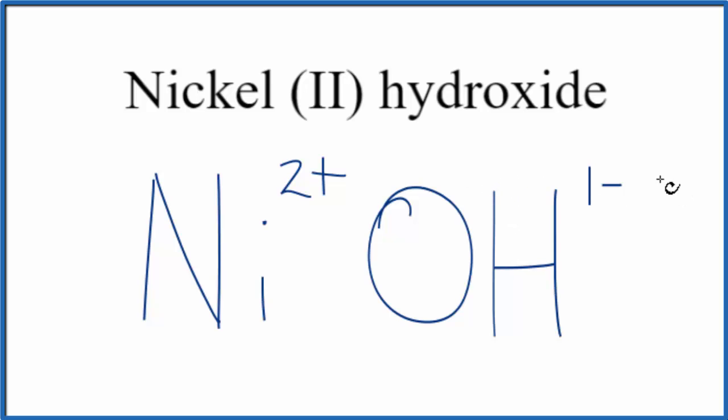This is an ionic compound, and we need to make sure the charge adds up to zero. We have a net charge of zero for the compound. Right now, we have 2+ on the nickel, and then the hydroxide ion is 1-. If we could have two hydroxides, 2 times 1-, that's 2-, and the 2+, that would give us a net charge of zero.